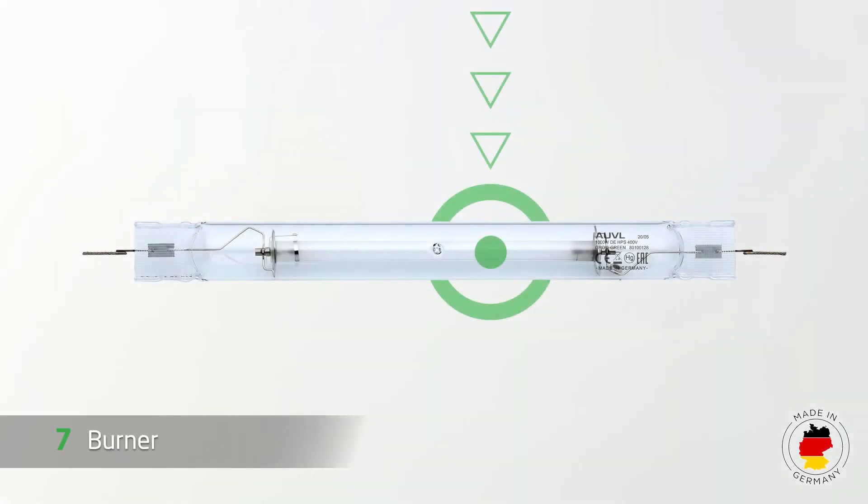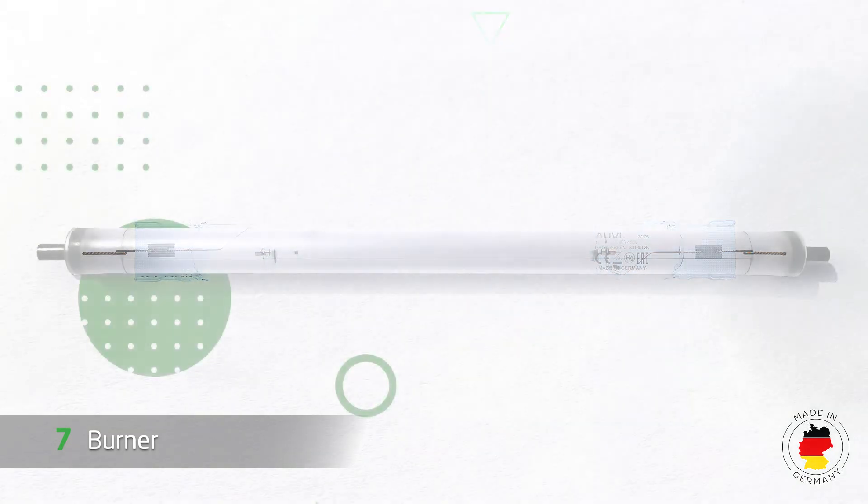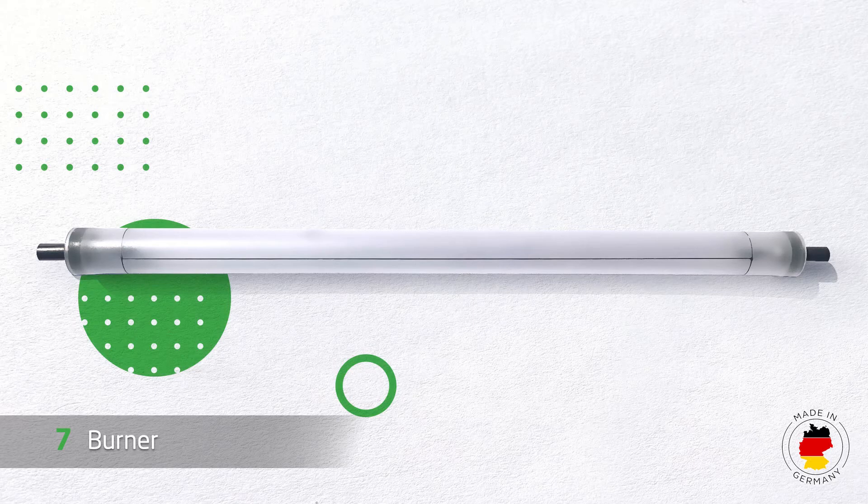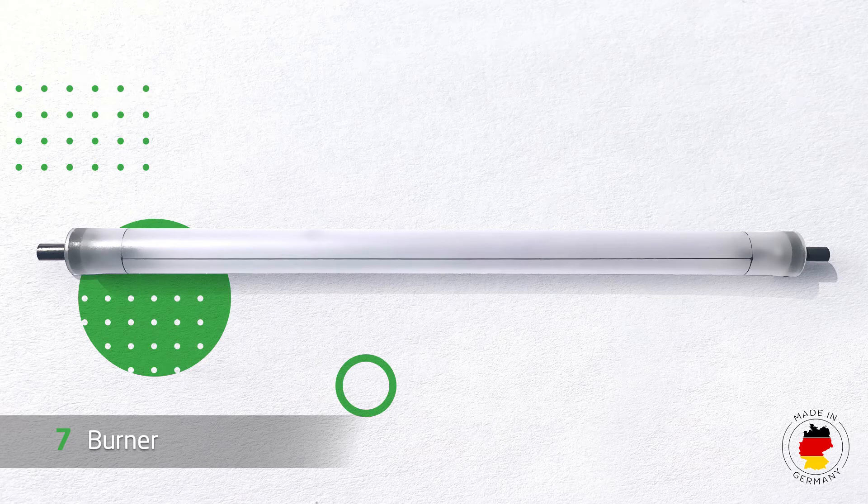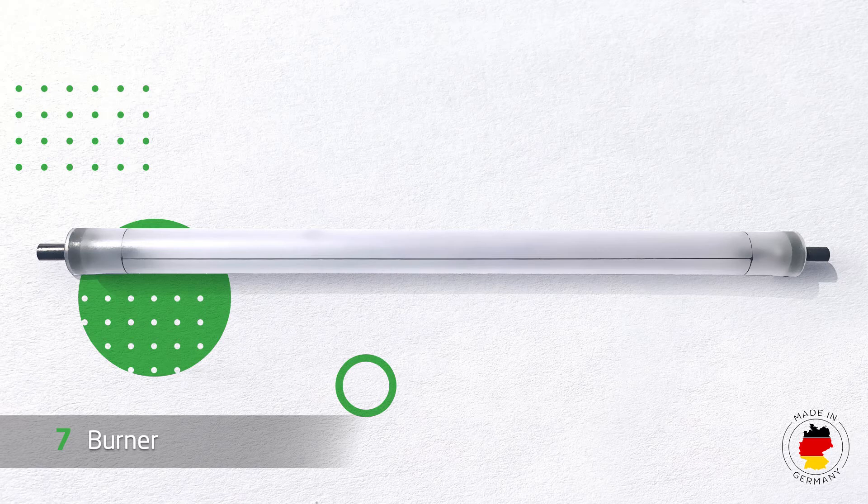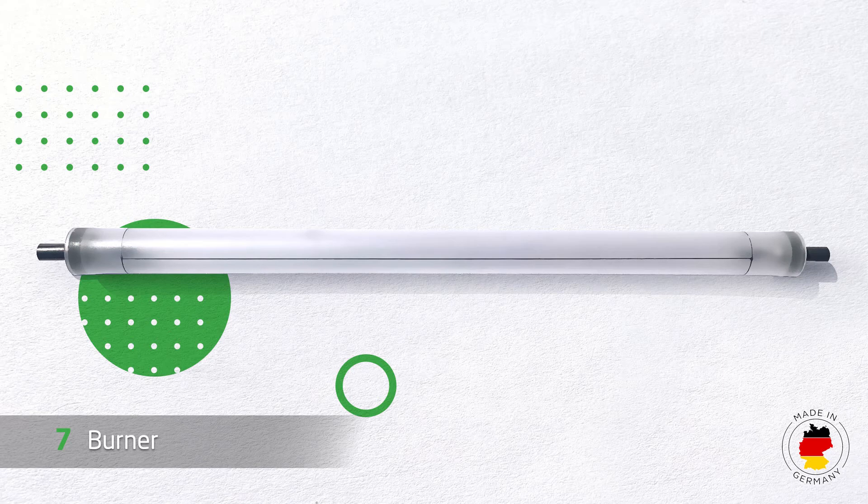Number seven, the burner or arc tube - name it as you like. It is the heart of the discharge lamp with the two opposite electrodes. High-purity ceramic alumina is used as the basic material. High melting temperatures of over 2000 degrees Celsius, very high thermal conductivity, and high dielectric strength of up to 35 kilovolts per millimeter are only three of the important characteristics a good arc tube must have. By the way, we also manufacture burners ourselves at our production facility.